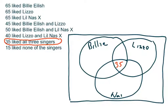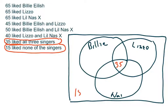Then look and see if there's any other data that involves all three sets. There probably is — the last piece of data: 15 liked none of the singers. That means they can't belong in any of these sets at all, giving them a place outside the sets altogether. Those are the 15 that would be outside. Having looked at the data involving all three sets, begin now to look at data that involves two sets.